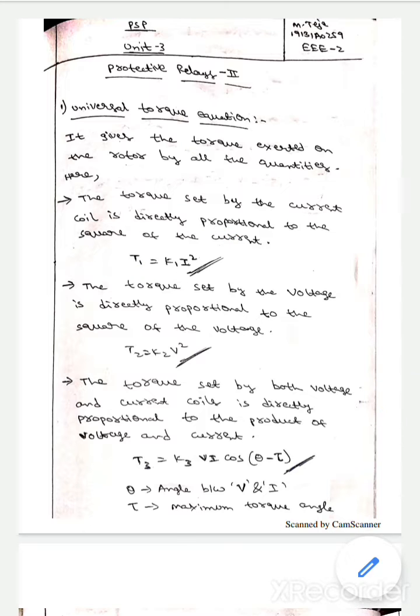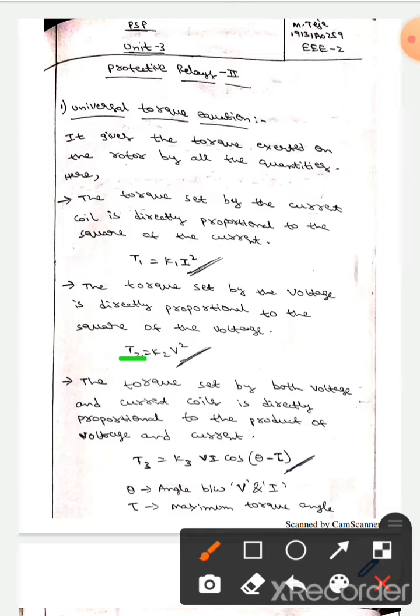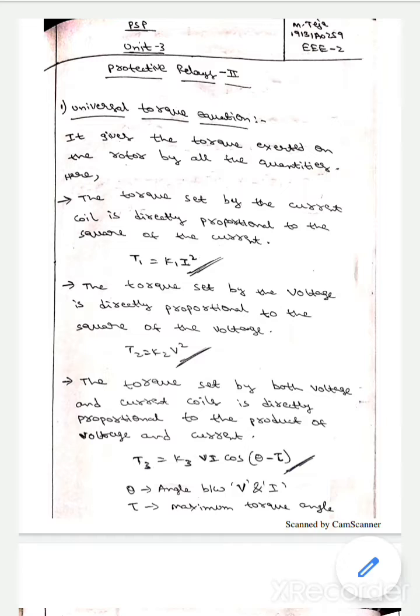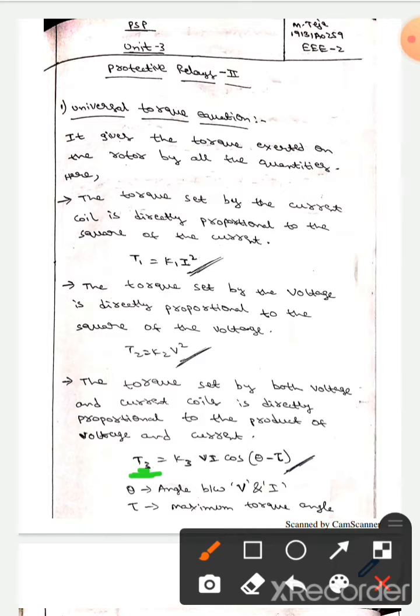Whereas T2 is the torque set by the voltage and it is directly proportional to the square of voltage. So we can write T2 equals to k2 into v square.